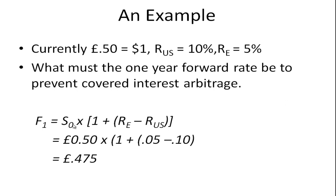If we use the approximation, we use this formula: spot rate, which was £0.50, times one plus the difference between the two interest rates. The difference is the rate in England minus the rate in the US. Since the US rate is higher, it's 0.5 times (1 + 0.05 - 0.10), which equals £0.475.